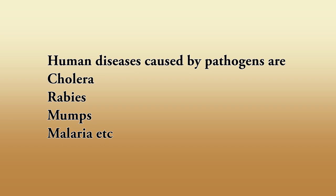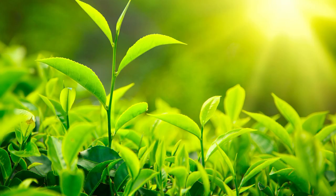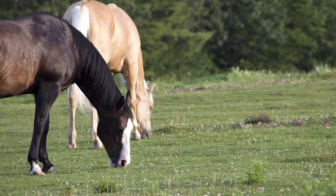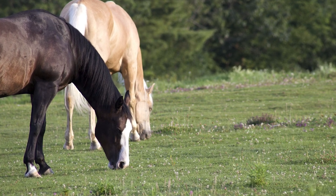Such disease-causing microorganisms are called pathogens. Some human diseases caused by pathogens are cholera, rabies, mumps, malaria, etc. Even plants and animals are also victims of these microorganisms. Now let us emphasize some of the disease-causing microorganisms.